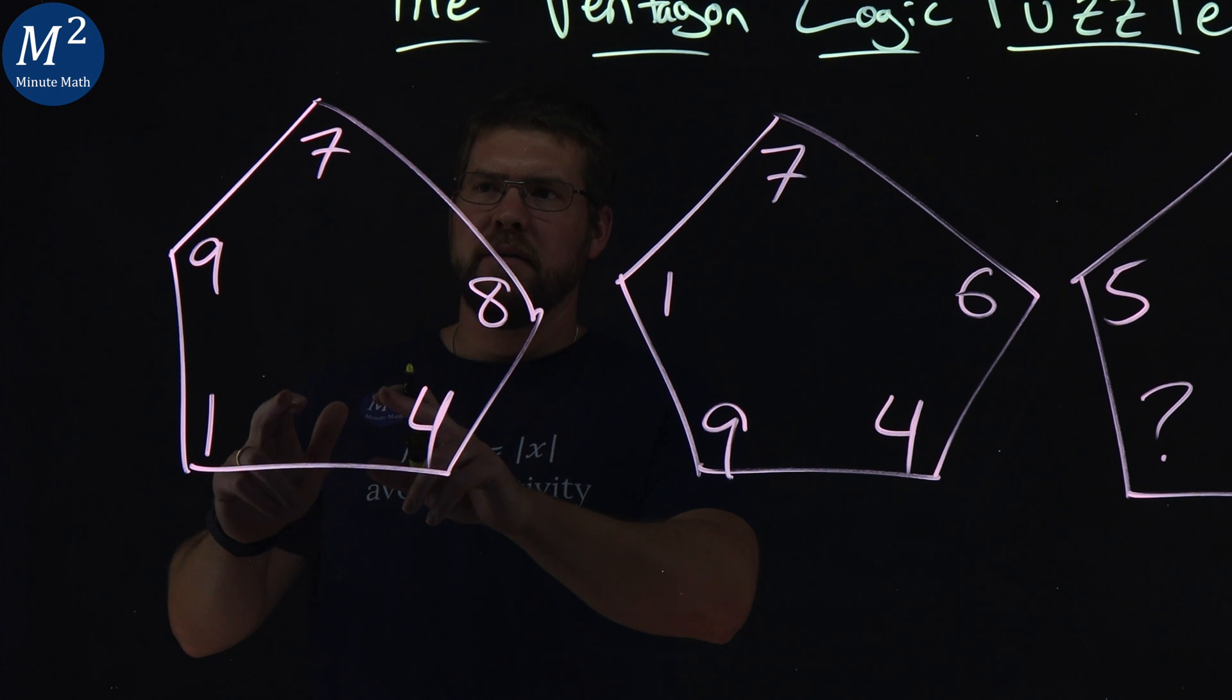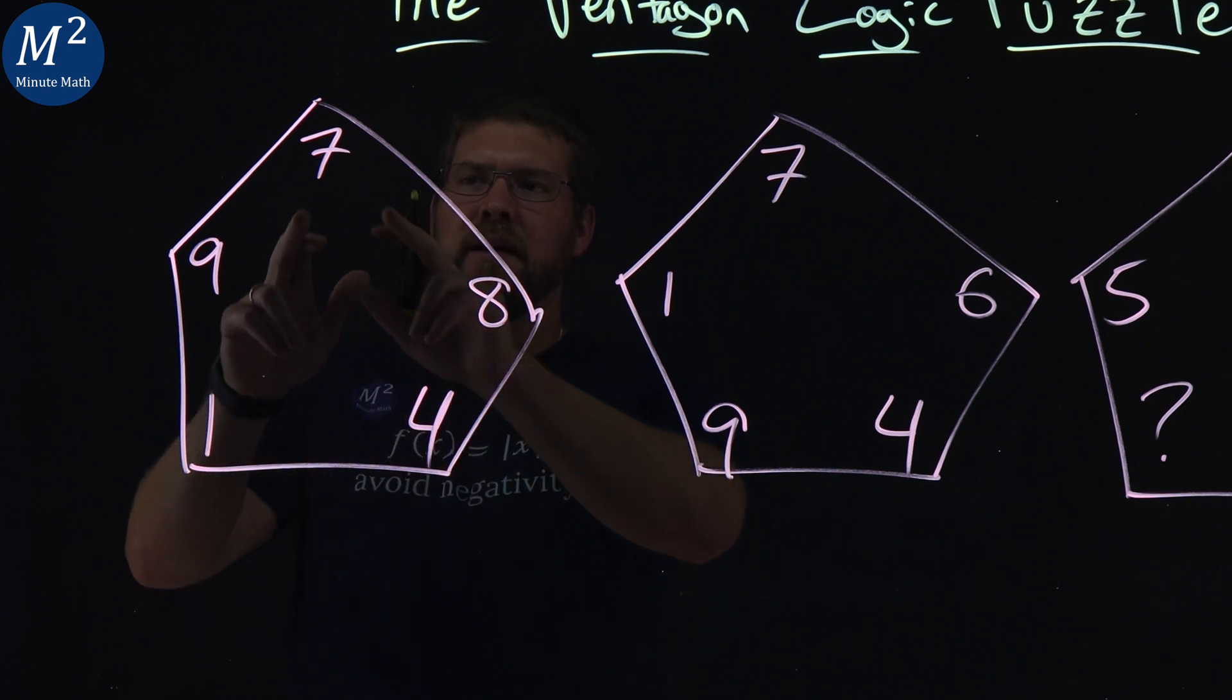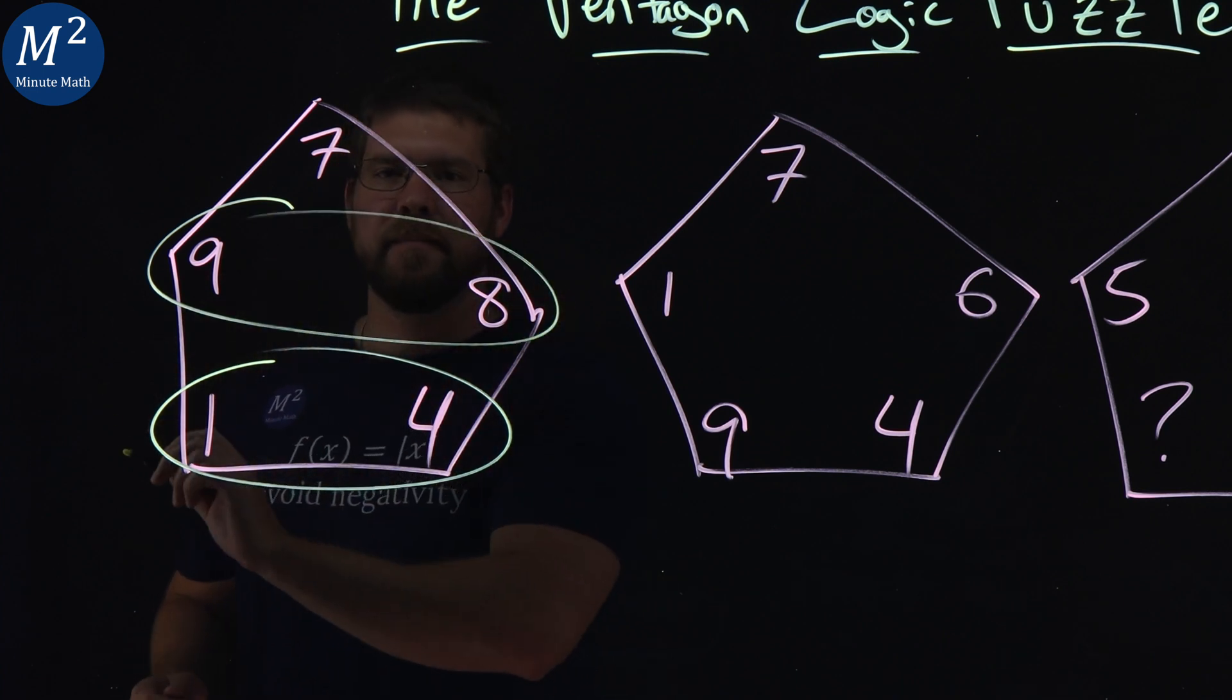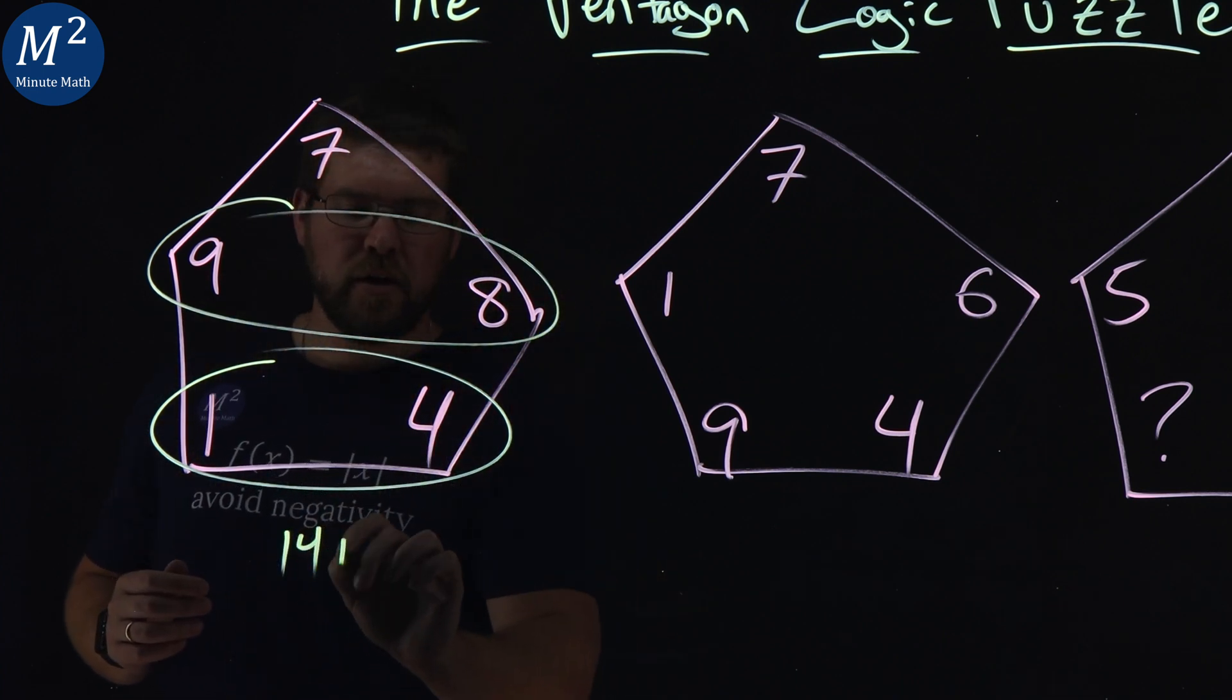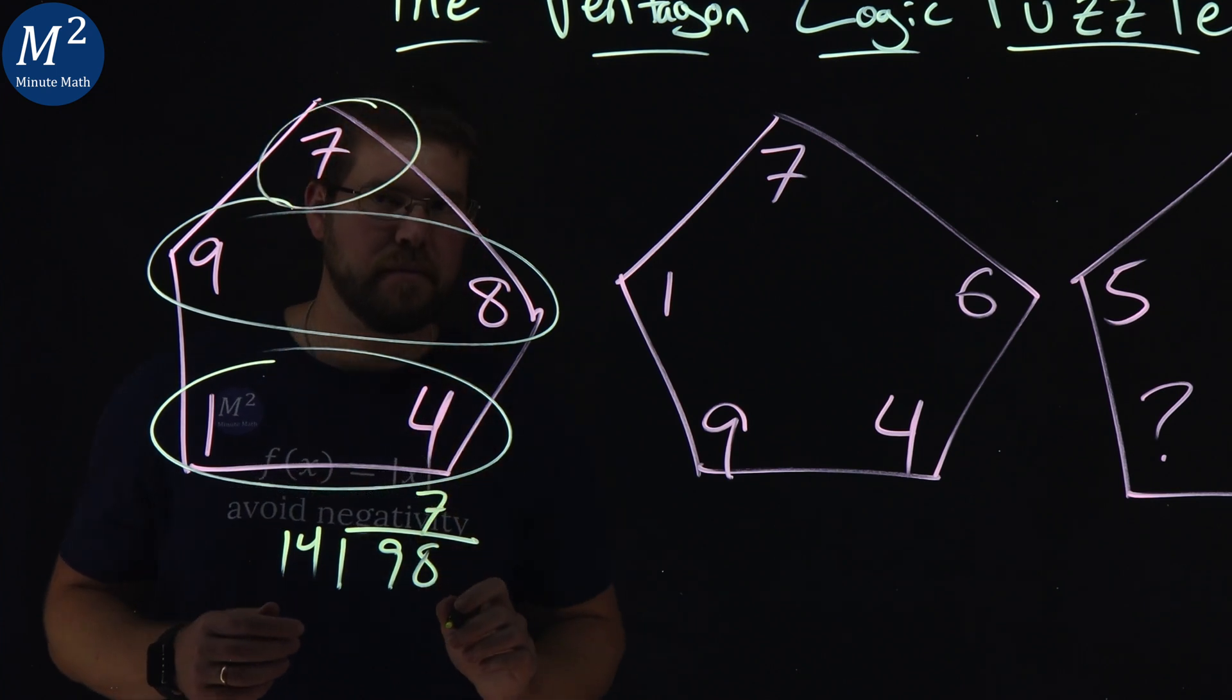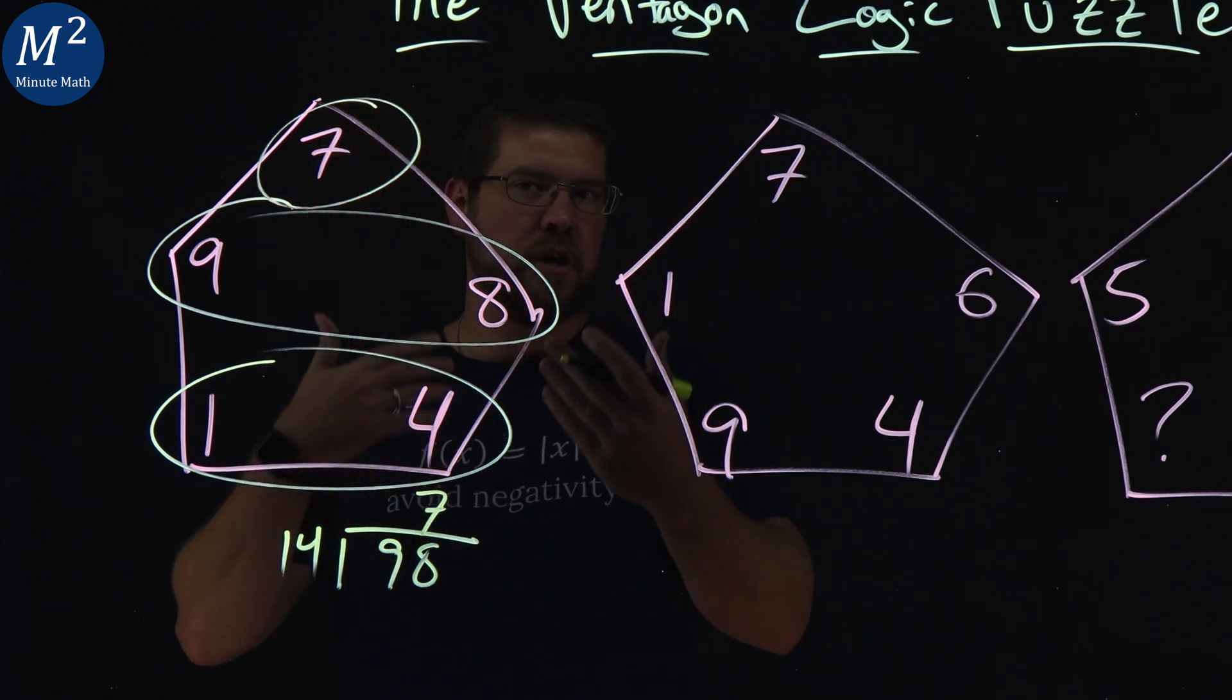And the first one I'm thinking about is 14, 98, and 7. Let's look at the 14 and 98. 14 goes into 98 seven times. So, we have some division going on.